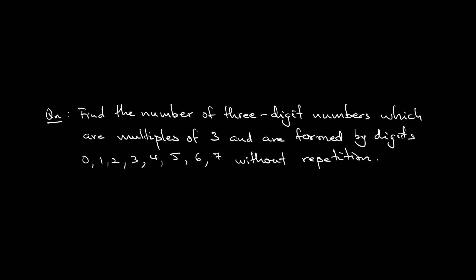The question asks you to find the number of three-digit integers which are multiples of 3 and are formed by digits 0, 1, 2, 3, 4, 5, 6, 7 without repetition. So the integers are 3 digits and these 3 digits are multiples of 3, and you can only use digits 0, 1, 2, 3 all the way until 7 without repetition. The question asks how many such integers are there?